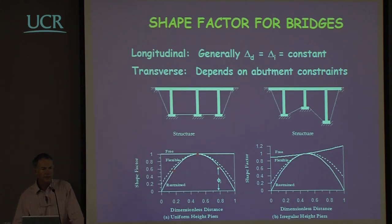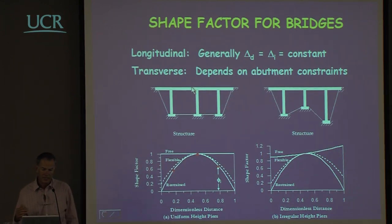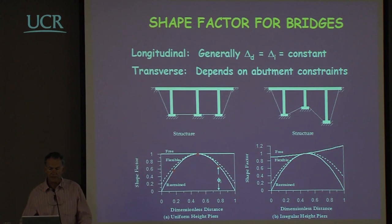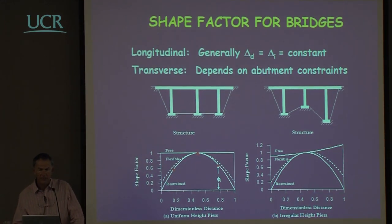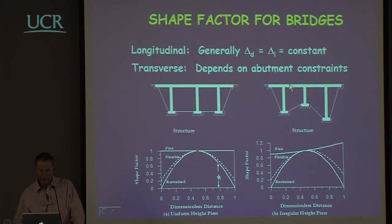When we come to bridges it gets more complex. In the longitudinal direction there's generally no problem because the displacements of all parts of the bridge are likely to be equal, unless it's a very long bridge with movement joints or significant elastic flexibility in the superstructure. However, when looking at the transverse direction we have more problems.